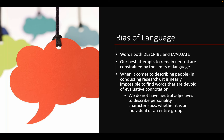Our best attempts at language are really to remain neutral, but this neutrality is constrained by the limits of our language. When it comes to describing people in research, it's nearly impossible to find words devoid of evaluative connotation. We don't have neutral adjectives to describe personality characteristics. If you think back to social psychology and the OCEAN model — openness, conscientiousness, and so on — it's one or the other. There is no truly neutral adjective.